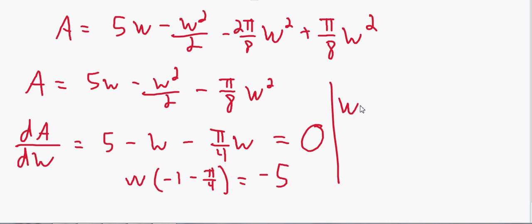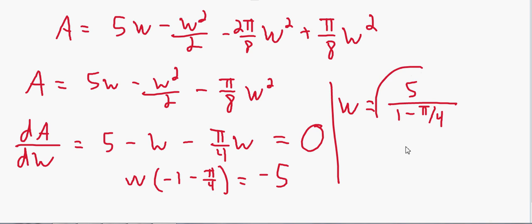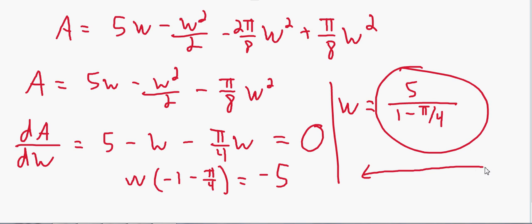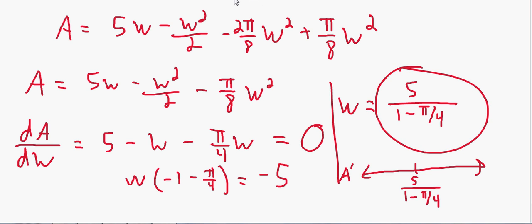Setting A'(w) = 0: 5 - w - (π/4)w = 0. Factoring out w: w(-1 - π/4) = -5, so w = 5 / (1 - π/4). We can turn that into a decimal. We only have one critical number.